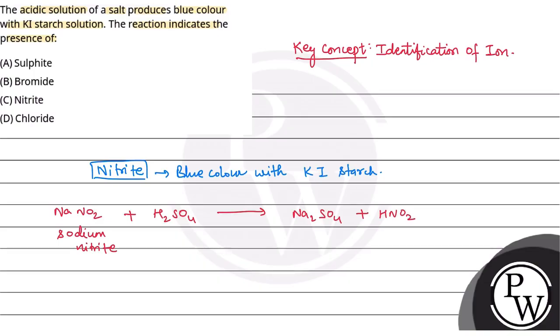Now if we balance it, this will be 2NaNO2 plus H2SO4 gives out Na2SO4 plus 2HNO2.